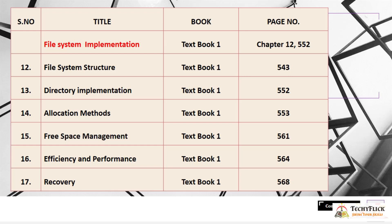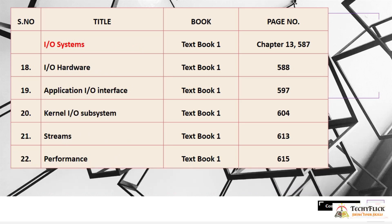Directory Implementation is at page 552. File System Implementation is covered fully in Chapter 12, starting at page 552. Topics include: Allocation Methods at page 553, Free Space Management at page 561, Efficiency and Performance at page 564, and Recovery at page 568.